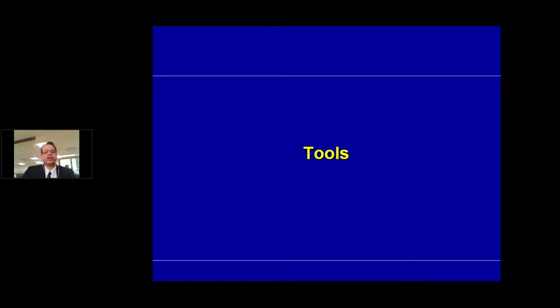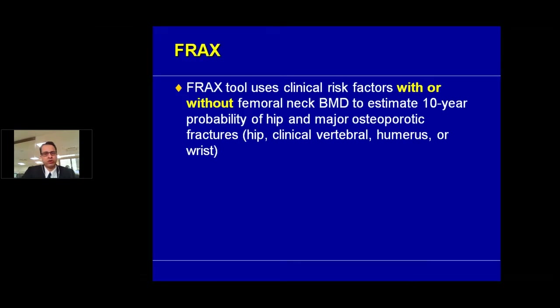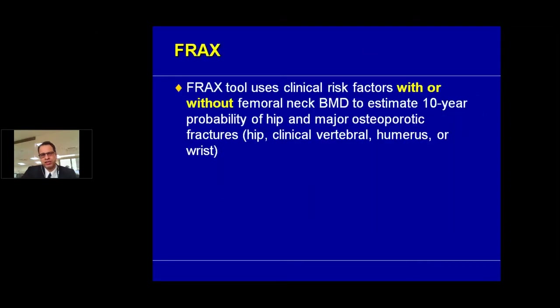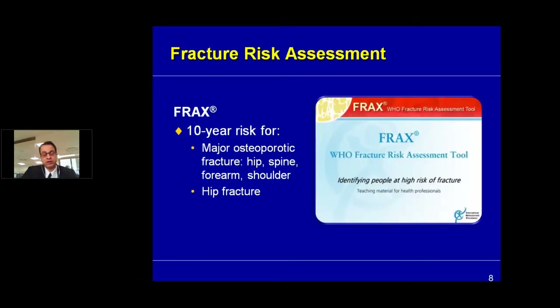Let's look at the various tools available in assessing osteoporosis. We all know about the FRAX score. It combines clinical factors with or without the femoral neck BMD to look at the 10-year probability of having a major osteoporotic fracture. A major osteoporotic fracture is defined as one affecting either the hip, the vertebrae, the humerus, or the wrist. The FRAX score looks at the risk of developing a fracture in the next 10 years.